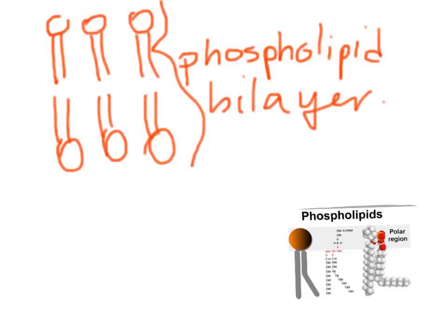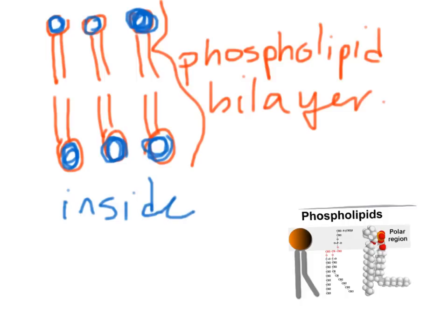We can recognize the polar regions that are attracted outwards and inwards. If this was the inside of the cell, the heads would be pulled in and the outside pulled out. These non-polar and hydrophobic tails are sandwiched in the center of the membrane.